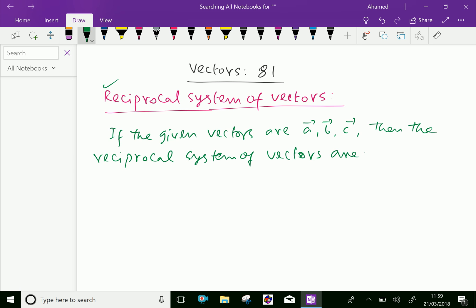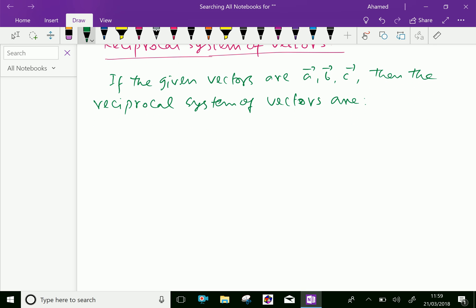Suppose the reciprocal of vector A is vector A dash, which can be expressed as B cross C over the box product of A, B, C. Vector B dash equals C cross A over the box product of A, B, C. And vector C dash equals A cross B over the box product of vector A, vector B, vector C.